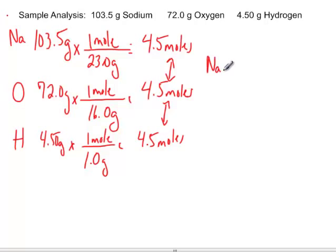We'd write Na 4.5, we'd write O 4.5, hydrogen 4.5. Now this is not the empirical formula yet. These are not whole number ratios, so this is not empirical.